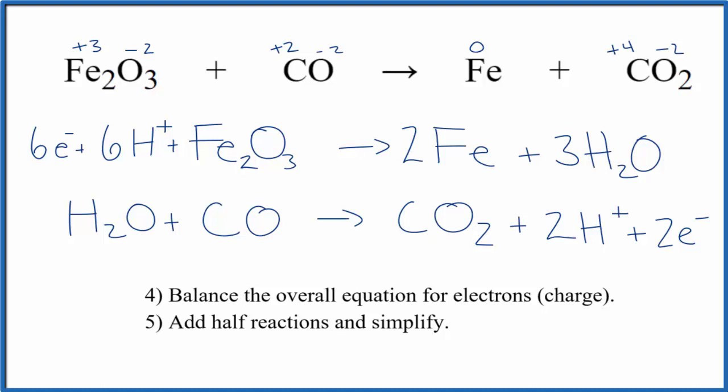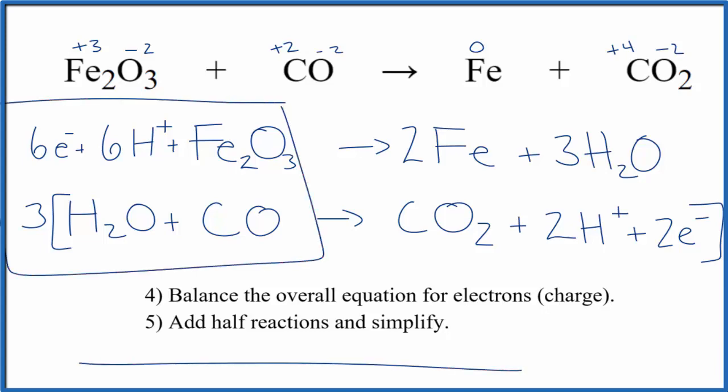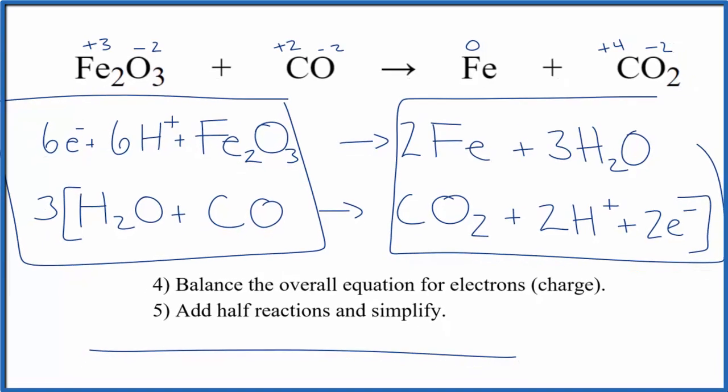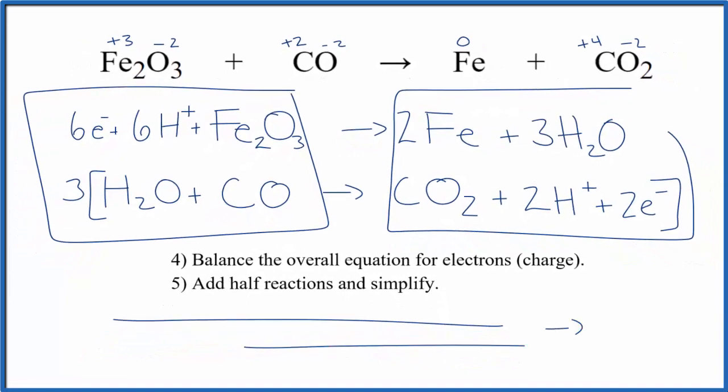If we multiplied everything here by 3, we have 6 electrons here. 3 times 2 electrons gives us 6 electrons. That would balance the electrons, we balance the charge. So now, before we simplify, we're going to multiply everything here in the brackets by 3. And then we're going to take our products and put those up top, and our reactants on the bottom. And we can simplify.